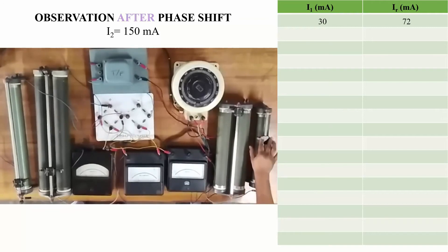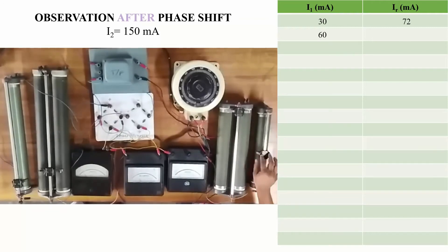For I1 equal to 30, we get IR equal to 72 milliamperes. For 60 we have 56 milliamperes. For 90 we have 38 milliamperes.